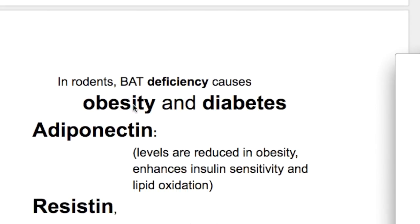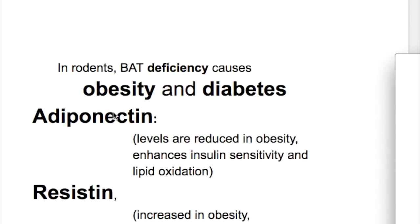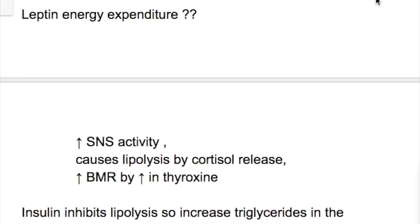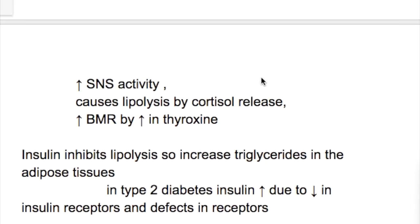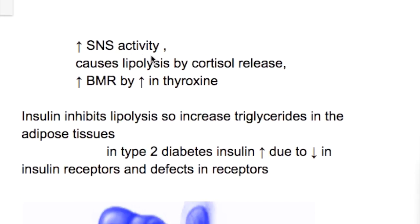In rodents, BAT deficiency causes obesity and diabetes. Leptin increases energy expenditure by: (1) increasing sympathetic nervous system activity, (2) causing lipolysis via cortisol release, and (3) increasing BMR through an increase in thyroxine.